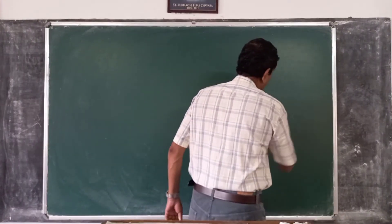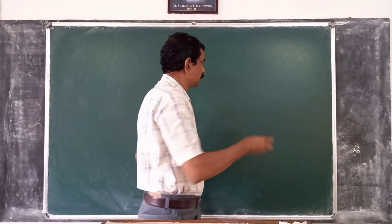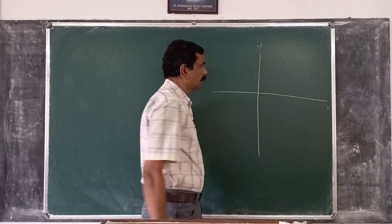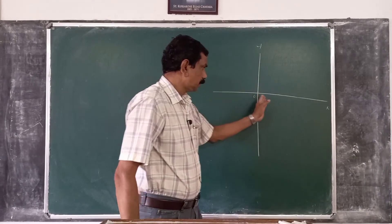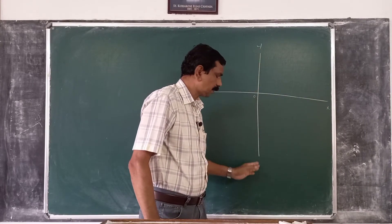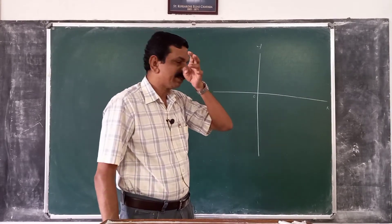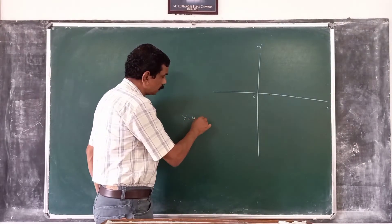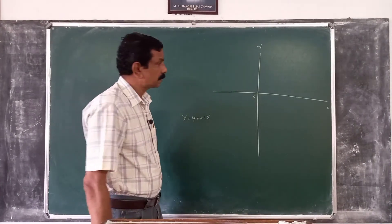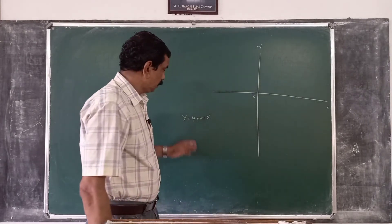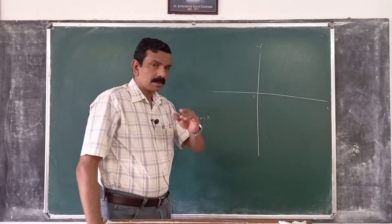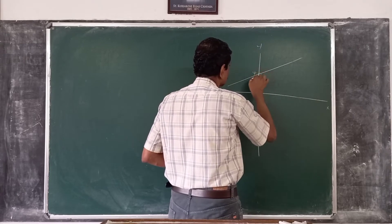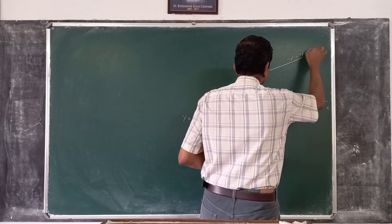Any non-vertical line can be represented by such an equation. Suppose we have an xy coordinate system with positive and negative values of x and y. For example, if we have the equation y = 4 + 0.2x, and we plot this equation as a graph, we get a straight line. At x = 0, y = 4.